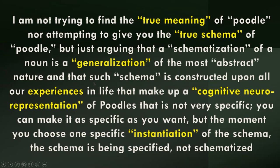A schematization of a noun is a generalization of the most abstract nature. Such a schema is constructed upon all our experiences that make up a cognitive neural representation of poodles. Schematizations are not specific — they can become specific when used to identify specific instantiations. Instantiation means picking one exemplar of a category; at that moment, the schema is being specified, not schematized.